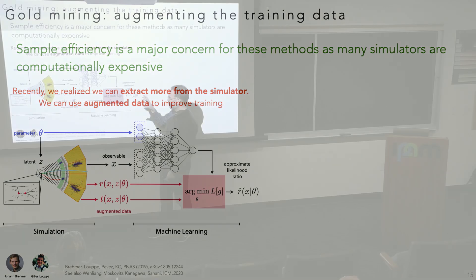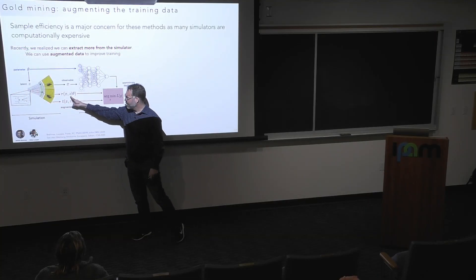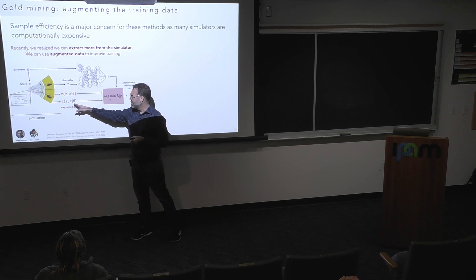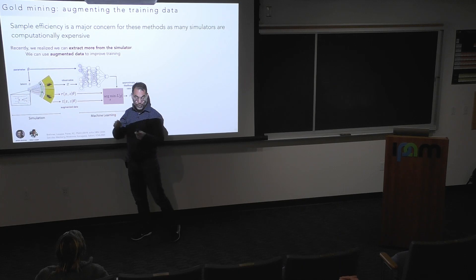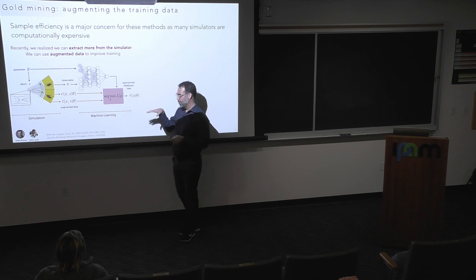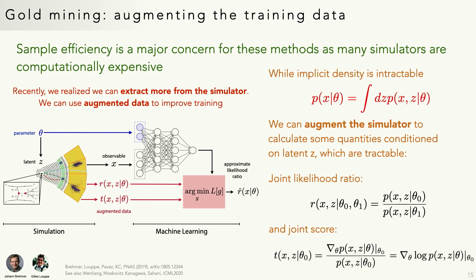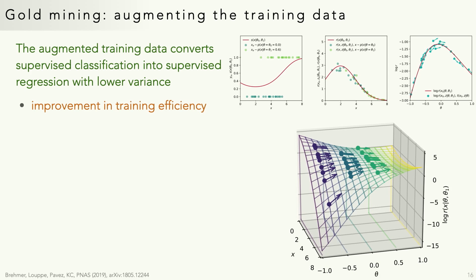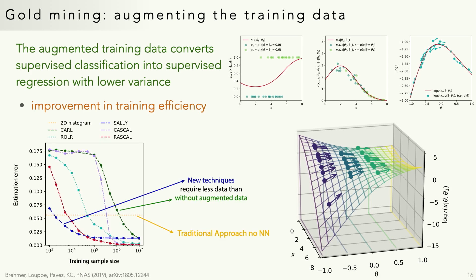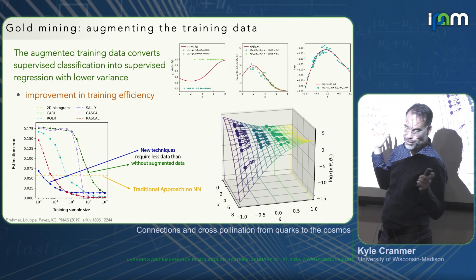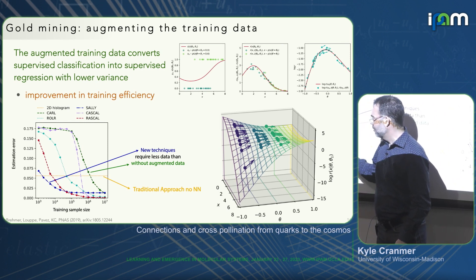In simulation-based inference, you run your simulator, get out synthetic observations x, you know what parameters you used, and then you try to learn probabilistic relationships — like the probability of x given theta, or theta given x, or a likelihood ratio of how much more likely an observation is for one value of theta versus another. One thing we realized is that even though P of x is intractable, if you keep track of all the latent variables — the whole path through the simulator — you can often track the probability of that particular path. This score — the gradient of log-probability with respect to theta — can be used to augment the training data, improving sample efficiency by orders of magnitude. With 1000 augmented training examples you can match what would otherwise require 10 million.